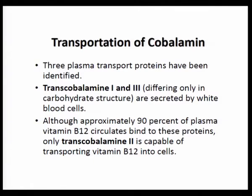There are basically three plasma transport proteins. Transcobalamine 1 and 3 differ only in carbohydrate structure and are secreted by leukocytes. Although approximately 90 percent of circulating plasma Vitamin B12 binds to these proteins, it is only Transcobalamine 2 which is responsible for transporting Vitamin B12 into cells. So Vitamin B12 must first cross the gastrointestinal tract — a rate-limiting step — and then carrier proteins enable it to enter the cells.